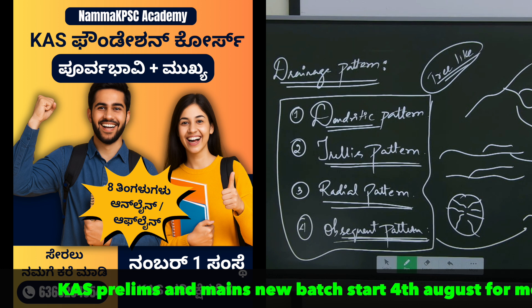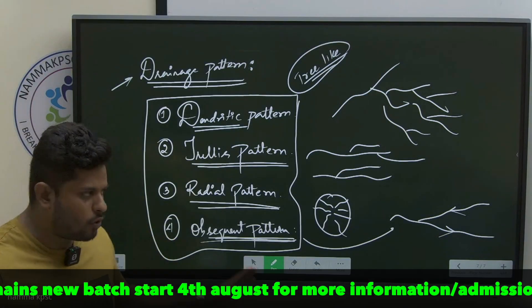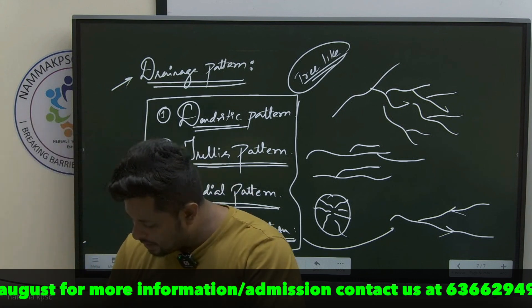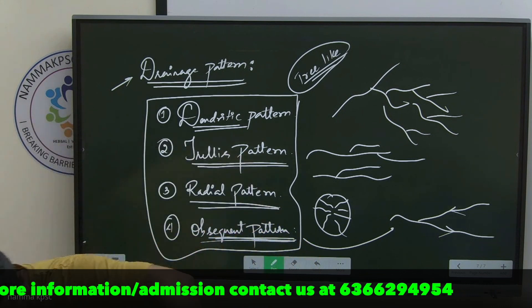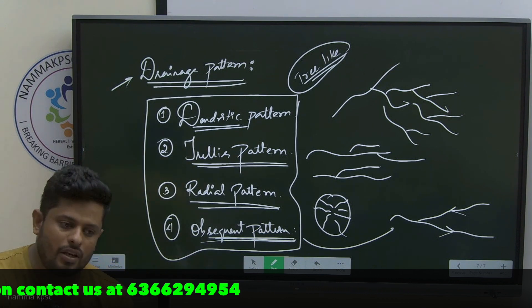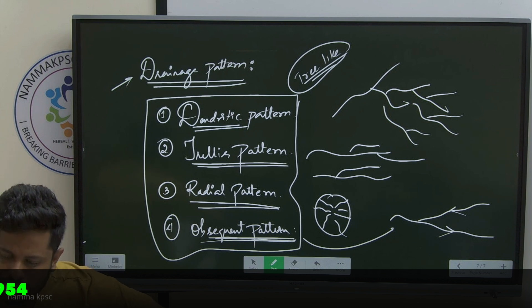First, most important example - dendritic pattern. Please observe this: dendritic pattern example is River Krishna and River Kaveri. Does it look like the branches of the trees? So dendritic pattern example is River Krishna and River Kaveri.